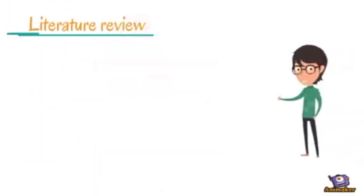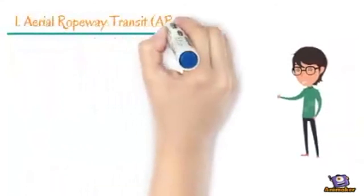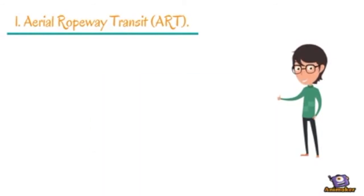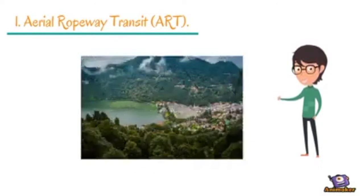Literature review. First, Aerial Ropeway Transit, ART. The authors define the Aerial Ropeway Transit as a type of aerial transportation mode in which passengers are transported in a cabin that is suspended and pulled by cables. This is one of the solutions to such cases. This mode is appropriate with hilly places and mountain topography.